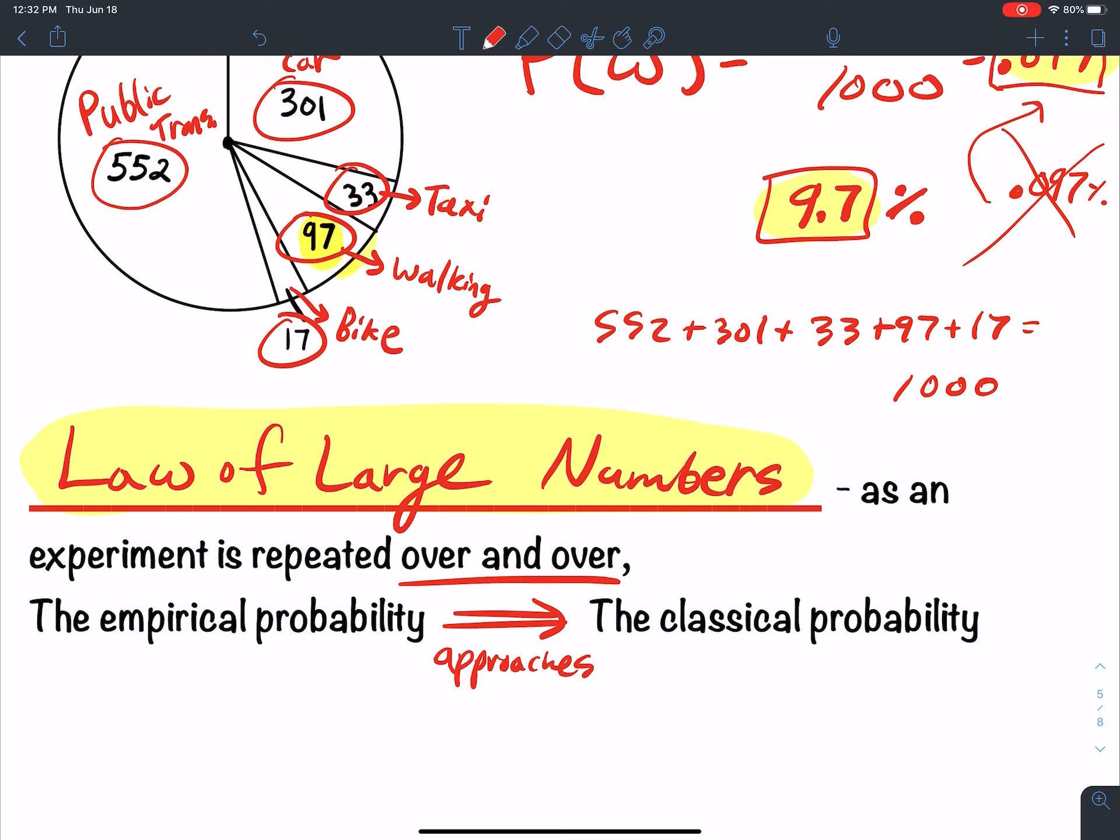This law of large numbers is what links the two together. The classroom setting of the theoretical, here's what should happen, versus the application in the real world where math is used in the real world through statistics. We observe this many people get sick by the virus out of this many people total. Therefore, it's like a 5% infection rate or whatever. So it's actually observed. And if you repeat the experiment over and over with larger and larger groups, the more times that it repeats, it approaches the true classical probability.